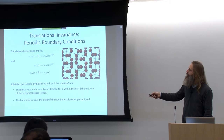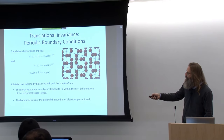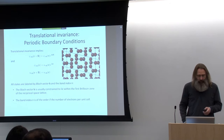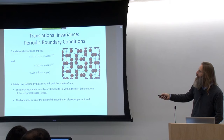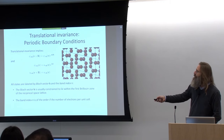We know that under periodic boundary conditions our one-electron functions have to look like this, and this is the strictly cell-periodic part. We label these solutions by two new quantities: one is called the Bloch vector — this complex phase vector K — and a so-called band index. This band index is of the order of the number of electrons per unit cell, which is quite a limited number.